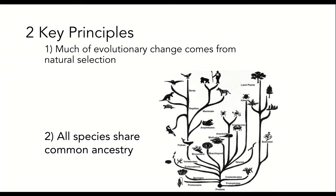Evolutionary theory has two key principles. The first is that much of evolutionary change comes from natural selection, although not all of it. The second is that all species share common ancestry. This is apparent in our cells — all life on Earth shares the same genetic material, or DNA. While it is comprised of different genes, different numbers of chromosomes, and different sequences of base pairs, the basic structure is the same.